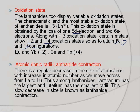Europium and ytterbium show +2 oxidation state because they attain half-filled and fully-filled configurations respectively. Cerium and terbium show +4 oxidation state so that they attain f⁰ and f⁷ configurations respectively. Cerium and terbium in the +4 oxidation state act as good oxidizing agents, whereas europium and ytterbium in the +2 oxidation state act as good reducing agents.